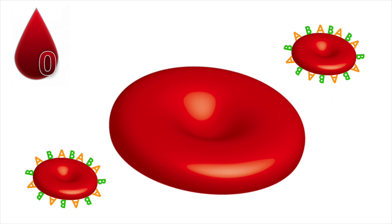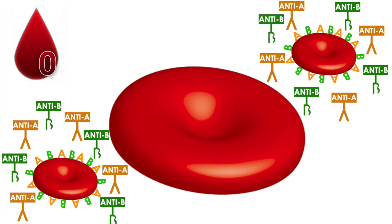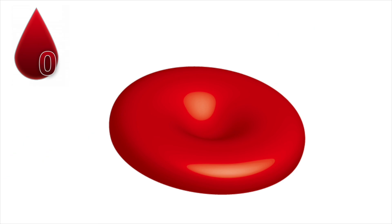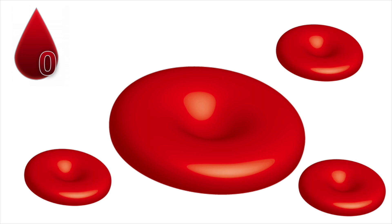If O blood were exposed to AB blood, which has both the A and B antigens on the cell membrane, it would elicit an immune response producing both anti-A and anti-B antibodies, causing agglutination or coagulation. Since A, B, and AB blood all caused an immune response, you may have concluded that O blood can only receive O blood donations.